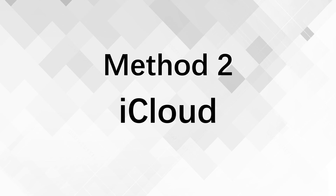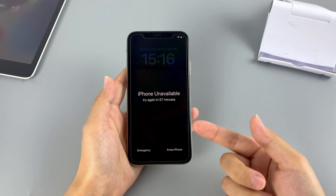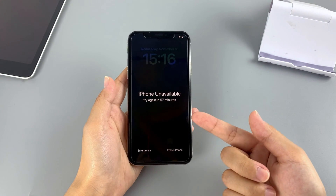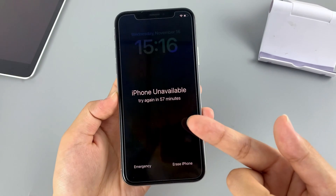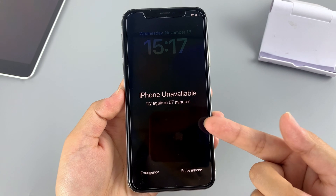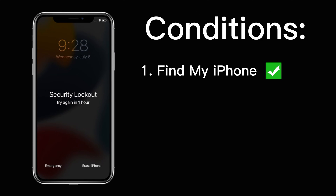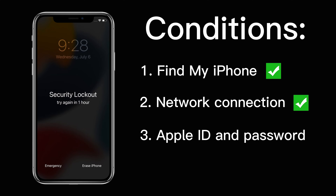Next, we'll introduce another way to reset your unavailable iPhone — that is by Find My iPhone in iCloud. Just take another device that can access a browser and you can easily erase the iPhone unavailable screen, even when you don't have your iPhone nearby. Be reminded that the Find My iPhone feature needs to be enabled on your iPhone previously. Like the first method, you should also know your Apple ID password and have your iPhone connected to a network.